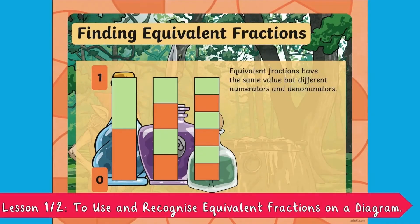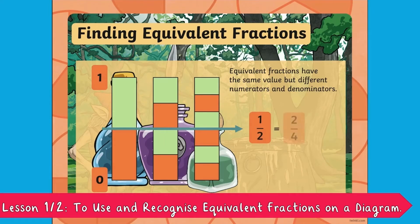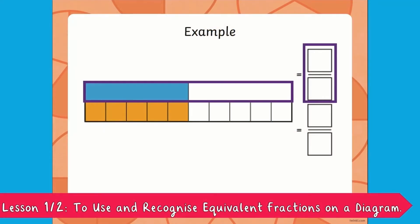In the first lesson, James teaches your children how to use a diagram to recognise equivalent fractions. Equivalent fractions have the same value but different numerators and denominators. We can see the arrow has gone right through the middle of all three counting sticks, so we can write two as our denominator.